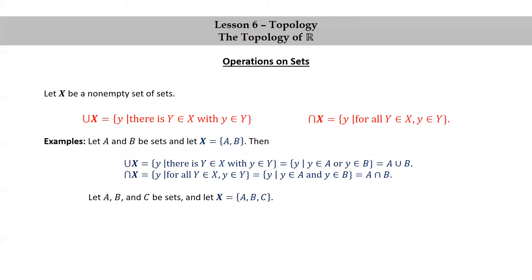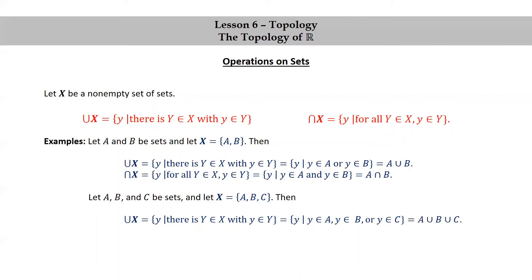What if we let X be a collection of three sets A, B, and C? In this case, union X is the set of y such that y is in A, y is in B, or y is in C, which is the union A union B union C. And similarly, intersection X is the set of y such that y is in A, y is in B, and y is in C, which is the intersection of A, B, and C.